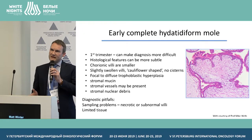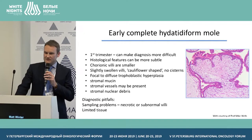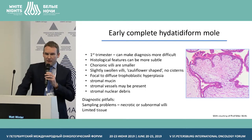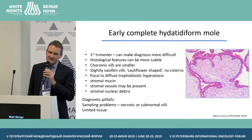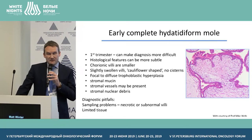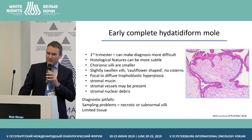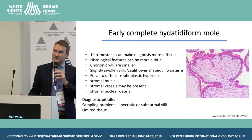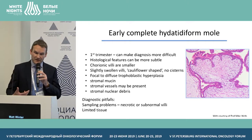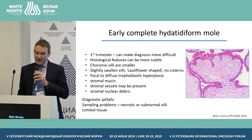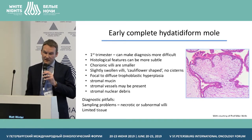Complete moles may present early in the first trimester, which can make diagnosis much more tricky because the histological features can be more subtle. The chorionic villi can be smaller and cauliflower-shaped, with no cisterns present. Rather than marked circumferential trophoblastic hyperplasia, you may see more focal to diffuse hyperplasia — which you might confuse with a partial mole. You're likely to see stromal mucin, nuclear debris, and stromal vessels may be present again. There are clearly diagnostic pitfalls, sampling problems can worsen this, and if there's no villi and you're seeing trophoblastic hyperplasia, you might be thinking of a choriocarcinoma.